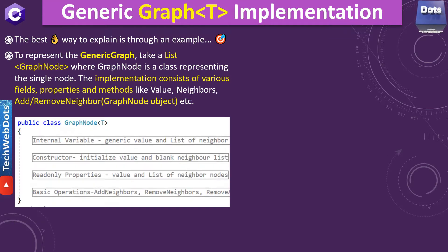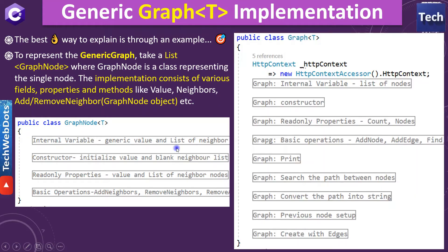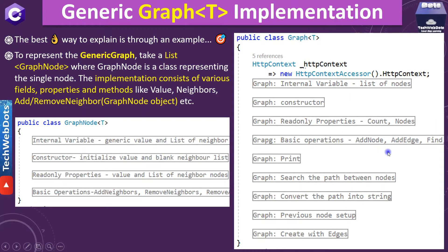The graph node implementation consists of various fields, properties, and methods — like value, neighbors, add neighbor, and remove neighbor. This is our generic graph node. When we use this graph node to implement the complete graph, the structure on the right-hand side will contain read-only properties showing how many nodes are in the graph, how to add a node, how to add edges, and more.